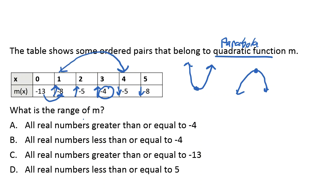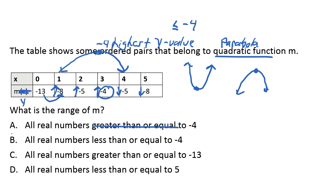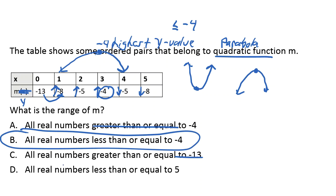The values go up until negative 4 and then come back down, making an inverted U shape. Since negative 4 is the highest y-value, all of our y-values must be less than or equal to negative 4. Looking at the answer choices: A is all real numbers greater than or equal to negative 4 — no, it needs to be less than or equal to. B is all real numbers less than or equal to negative 4 — that's it. C is all real numbers greater than negative 13 — no. D is all real numbers less than 5 — not it either. So B is the correct answer.